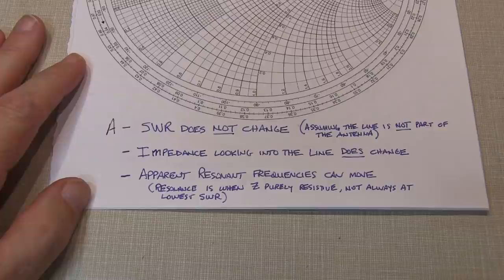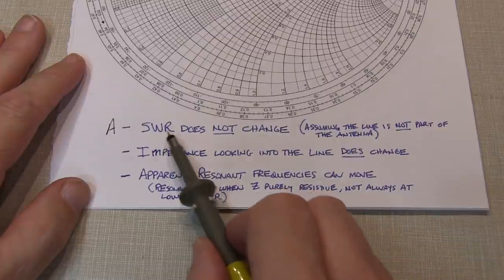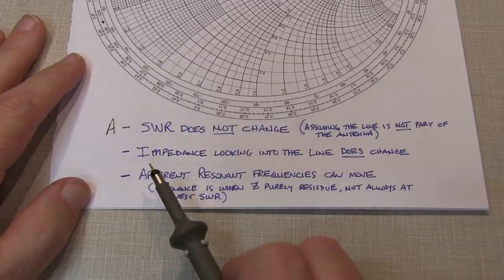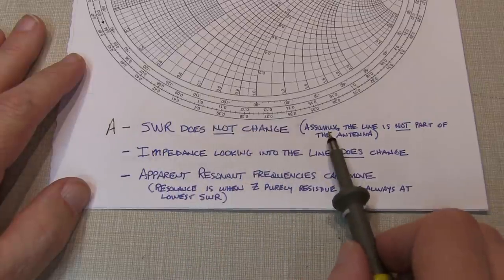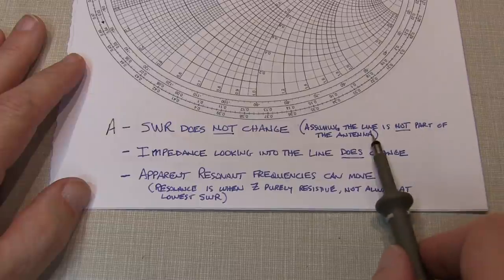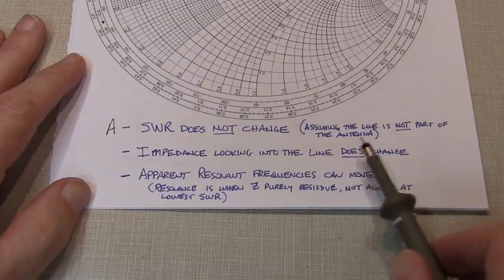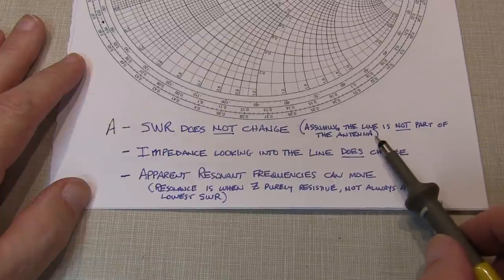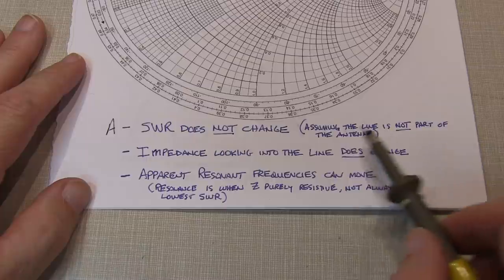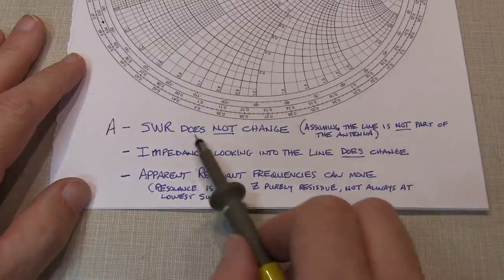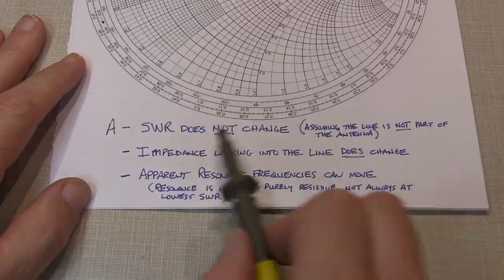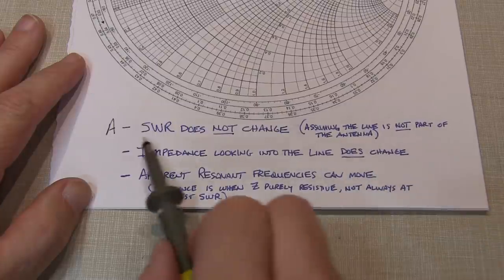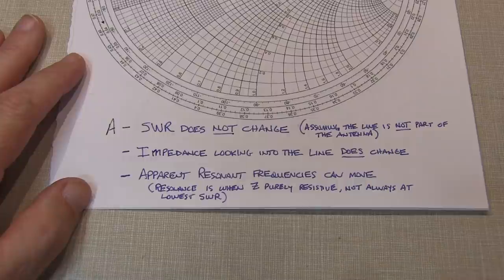The quick three-part answer is that the SWR does not change as you add or subtract transmission line length between your transmitter and the antenna. And of course, this is assuming that the line is not part of the antenna. And many times, that's not the case. Oftentimes, the shield of the coax becomes part of the counterpoise system for the antenna, so changing the line length may have some effect on SWR. But if the line is completely not part of the antenna, the SWR will not change.